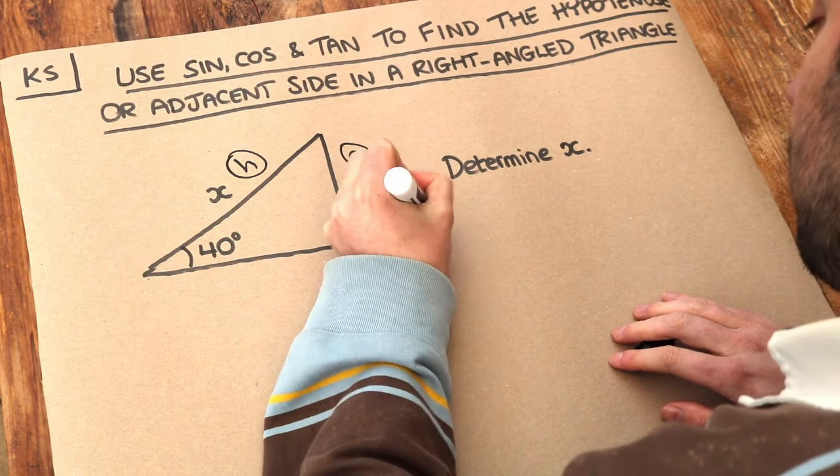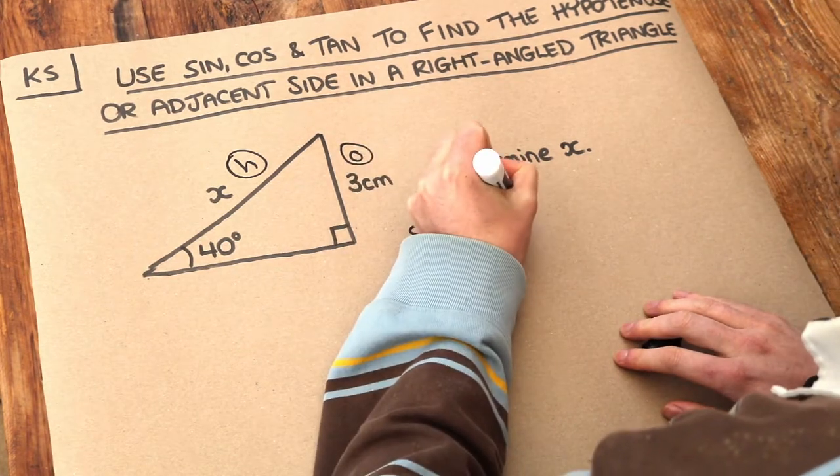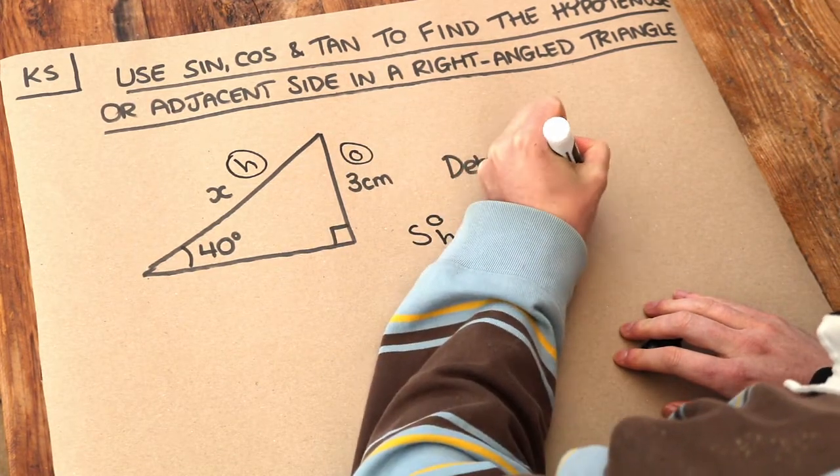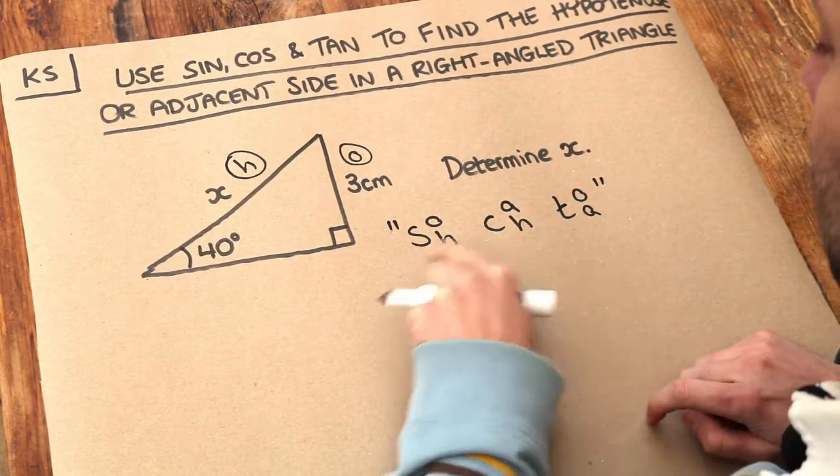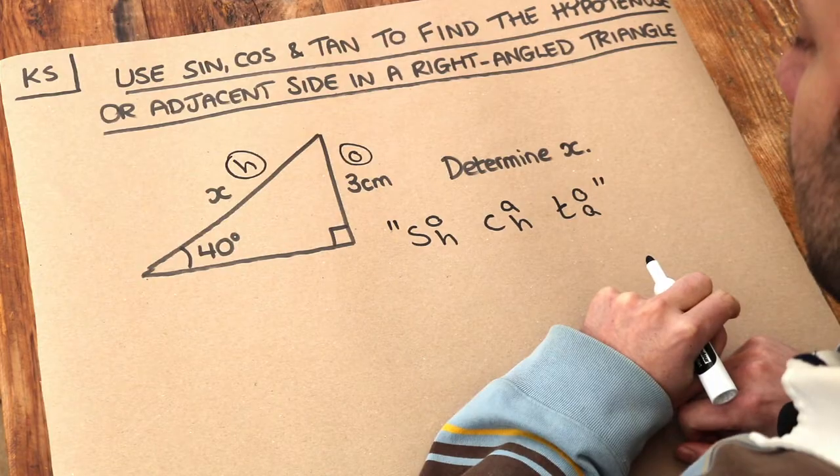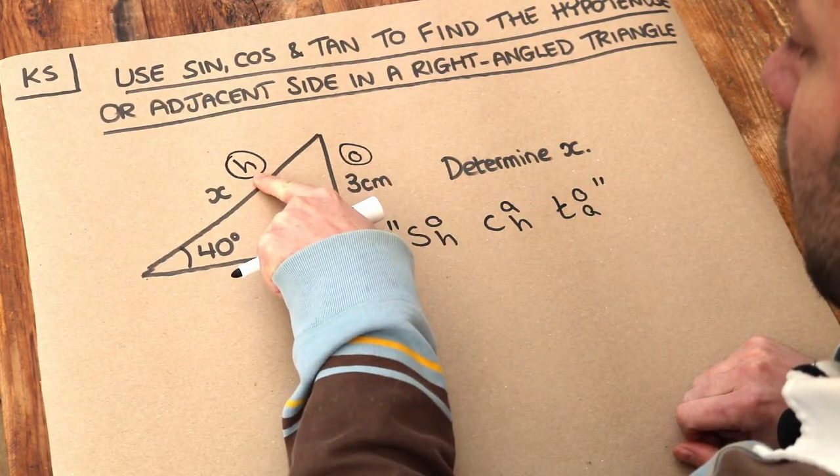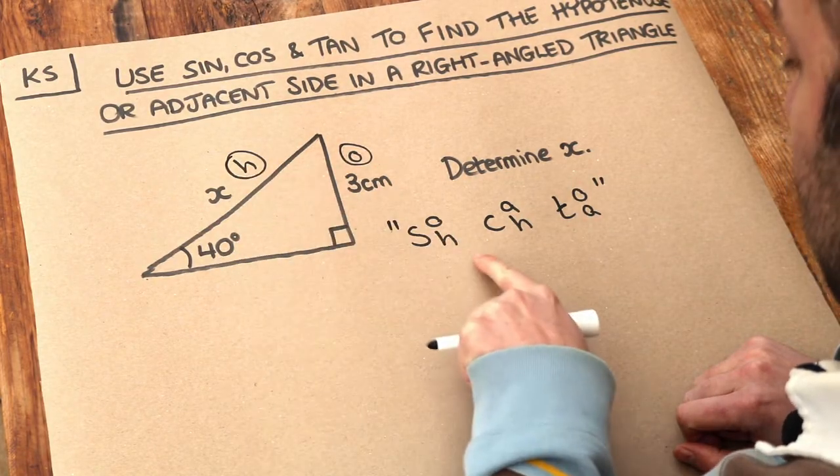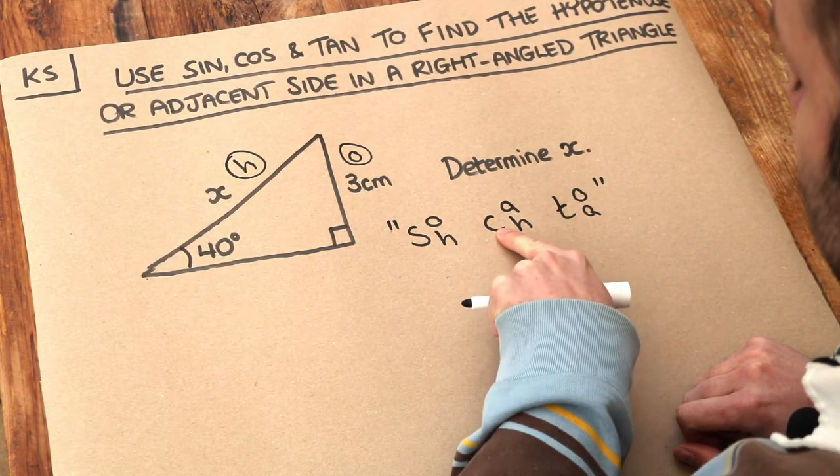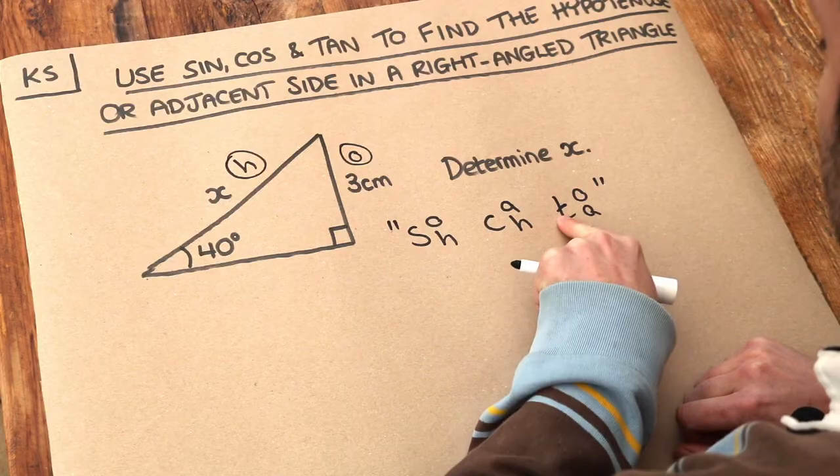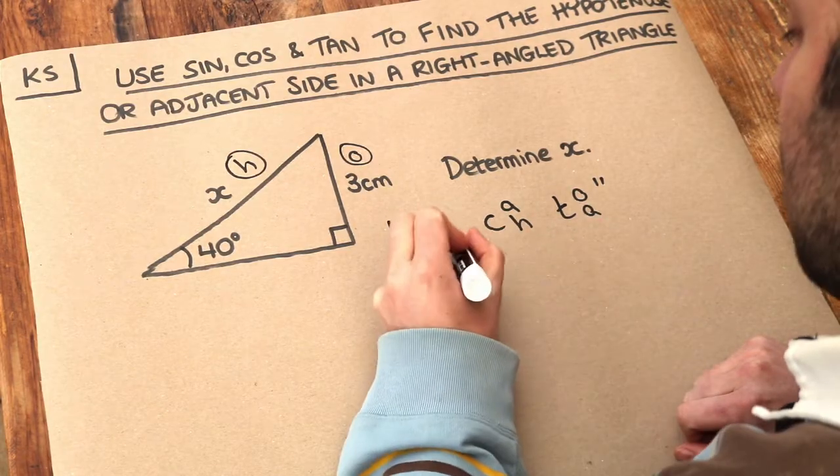So do you remember SOHCAHTOA, and it's just a nice way to remember whether you want to use sine, cos or tan. Now we're involving the opposite and the hypotenuse, O and H, now we can see this one here involves the O and the H, whereas cos involves A and H, tan involves O and A. So we want this one.